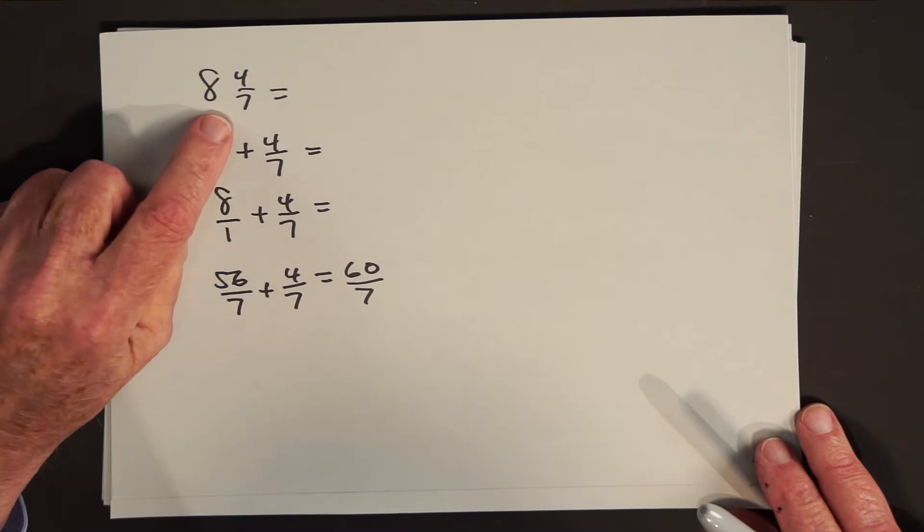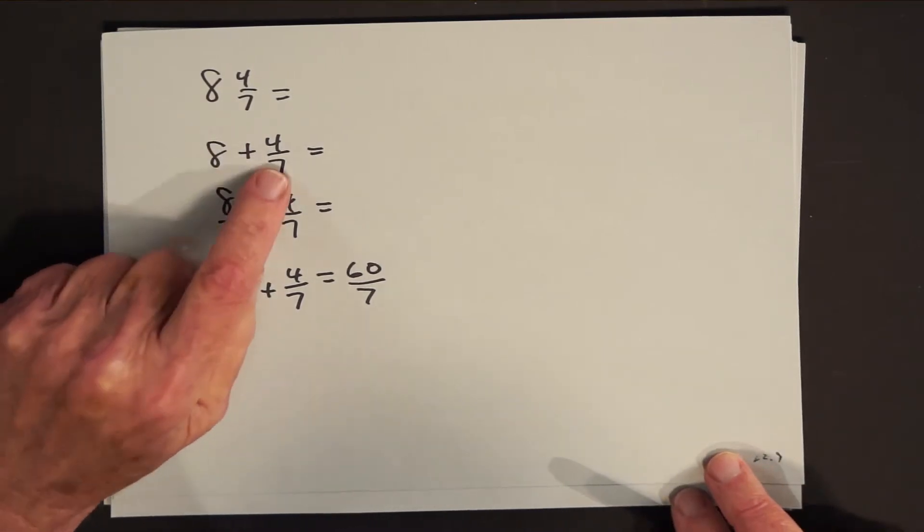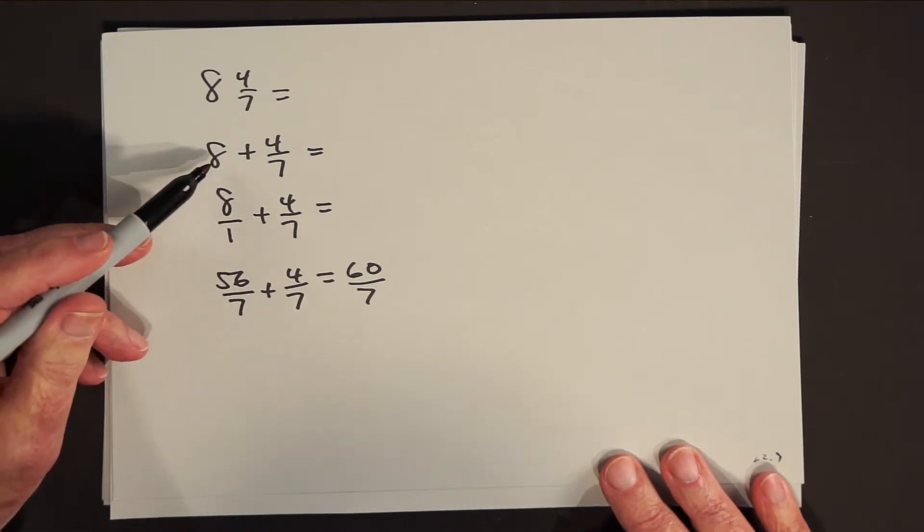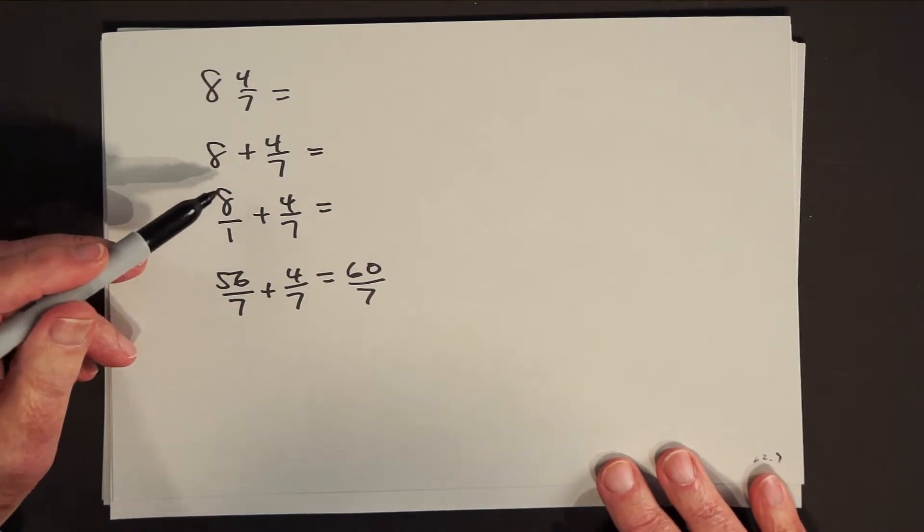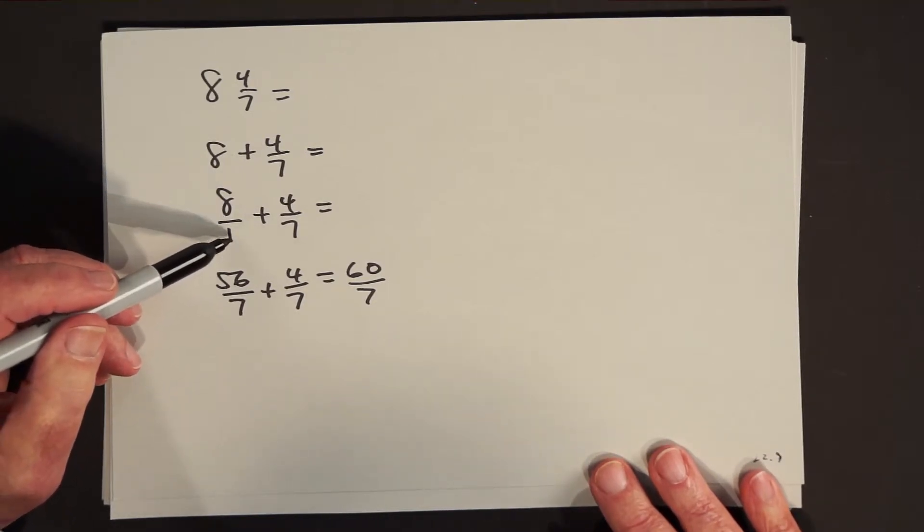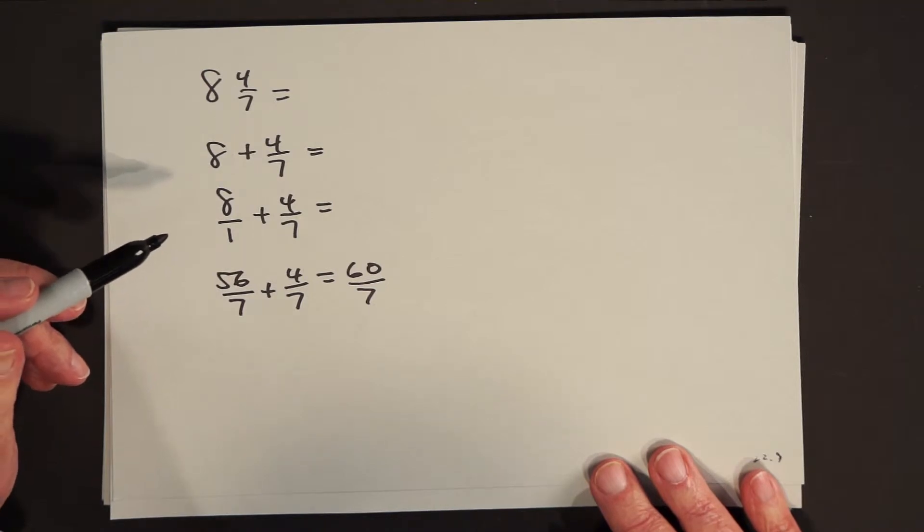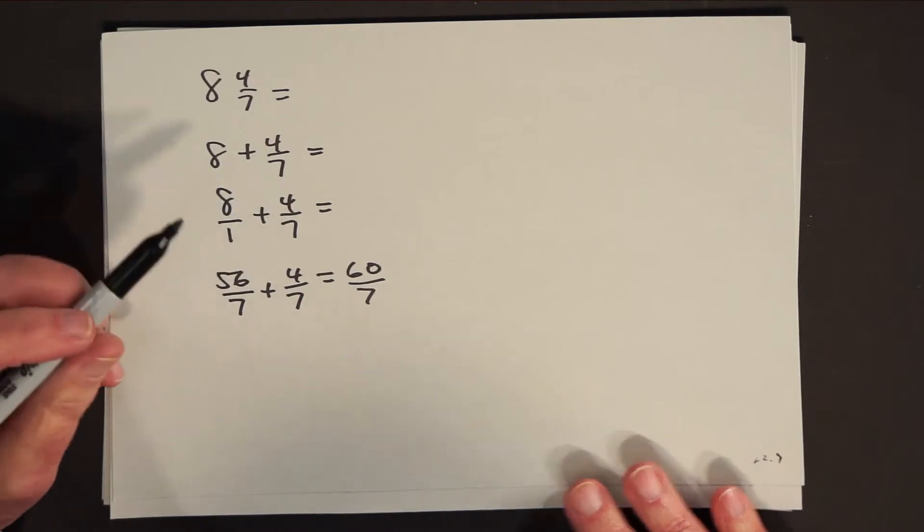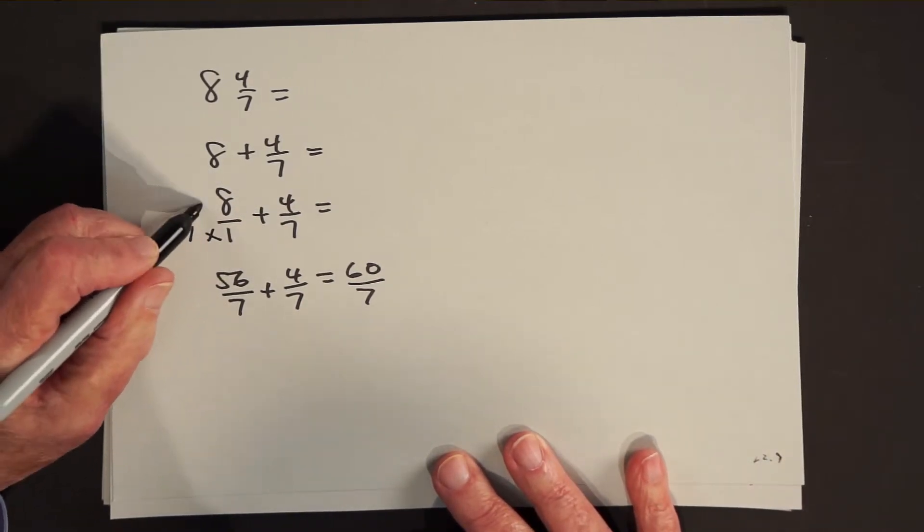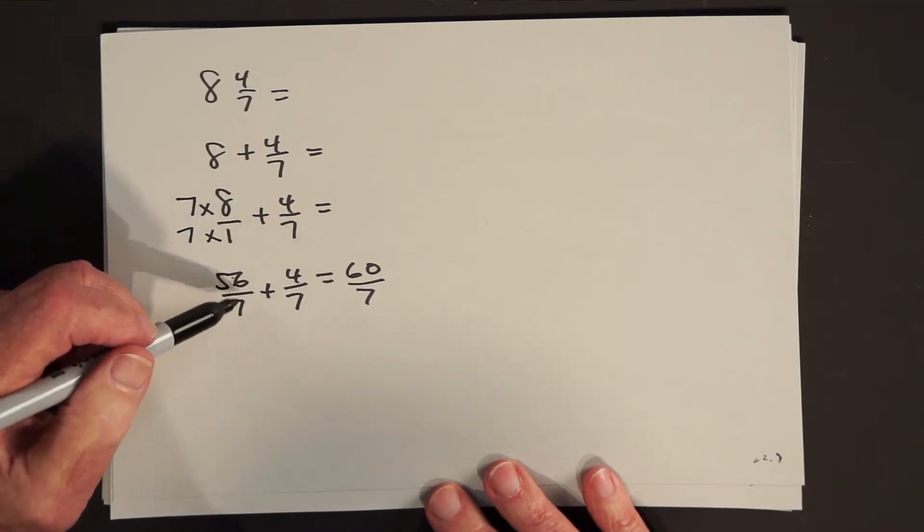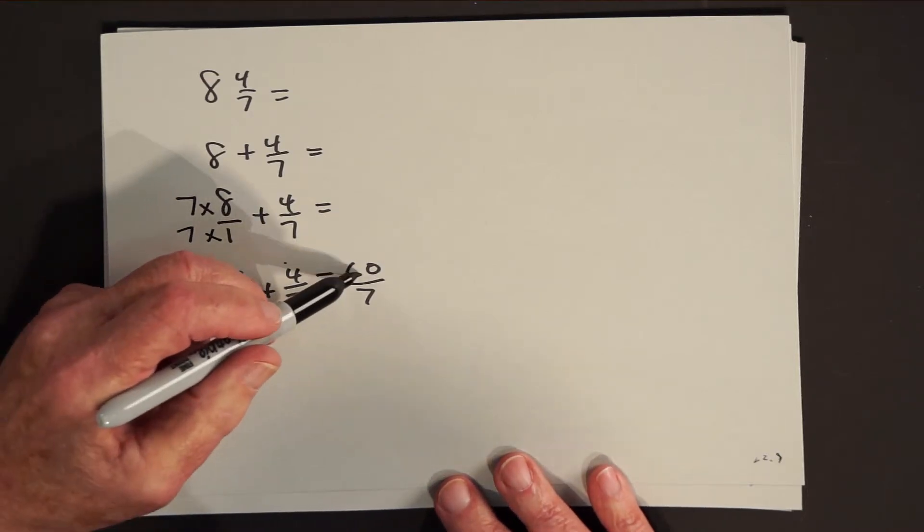If you wanted to be purely mathematical about this, you could take 8 and 4 sevenths and write what it means. It's 8 plus 4 sevenths. If you're more comfortable thinking of fractions rather than whole numbers mixed in with fractions, remember, you can always put a whole number over 1 without changing it. Because what does this mean? It means what must you multiply 1 by to get 8? The answer is simply 8. So I now want to add 8 over 1 plus 4 over 7. I can't add them unless they have a common denomination. So another name for 8 over 1 is 56 over 7. 56 over 7 plus 4 over 7 is 60 over 7.